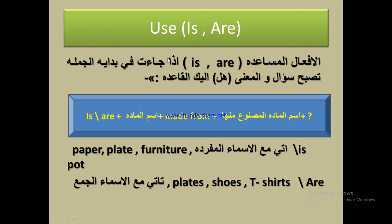Now how we use 'is' and 'are' — كيف نستخدم is و are. الأفعال المساعدة is و are — إذا جاءت في بداية الجملة تصبح سؤال. The rule: Is/Are + اسم المادة + made from + اسم المادة المصنوع منها + question mark. Note: 'Is' تأتي مع الاسماء المفردة like paper, plat, furniture, pot. 'Are' تأتي مع الاسماء الجمع like plants, shoes, t-shirts.